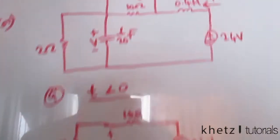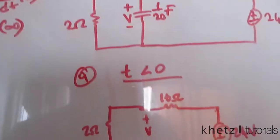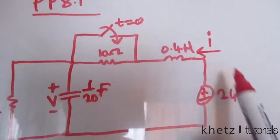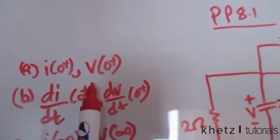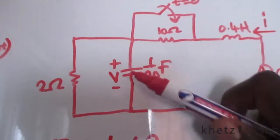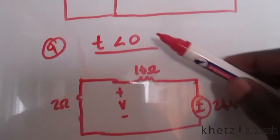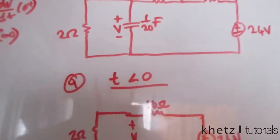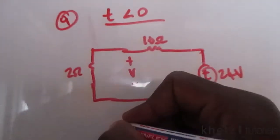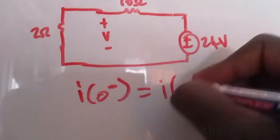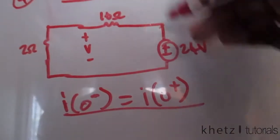The switch is only closed at time equals zero, so it doesn't have an effect for time less than zero. We have 2 ohms, 10 ohms, a short circuit, 24 volts, and an open circuit. For a capacitor the voltage doesn't change abruptly, and for an inductor the current doesn't change abruptly. Therefore, values found just before zero will equal values just after zero.